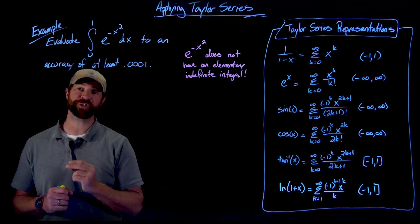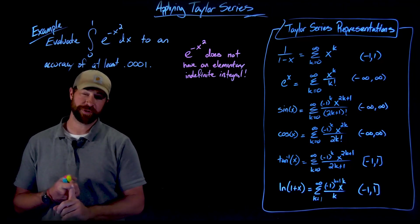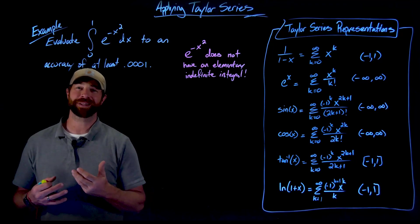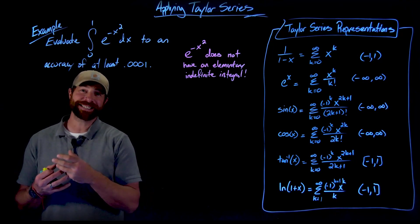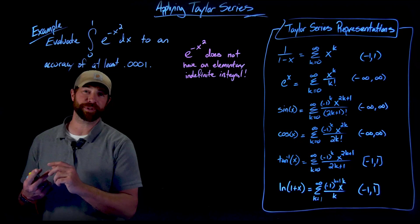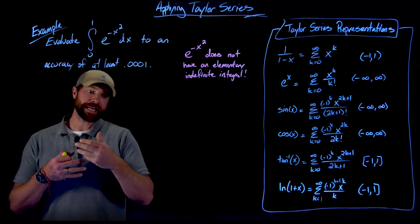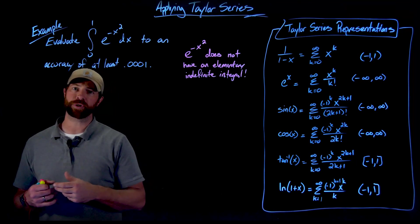This example is especially important for two reasons. First and foremost, e to the negative x squared is not just some crazy looking function that we'd like to play with, but it's actually essential to the analysis of probability and statistics. The e to the negative x squared is part of the expression for the normal curve.